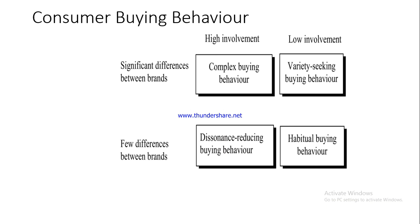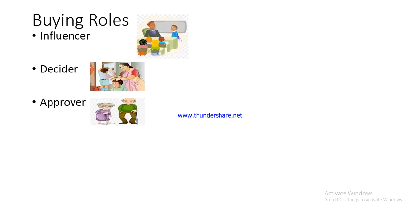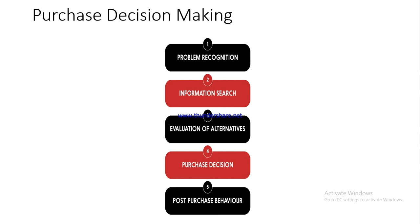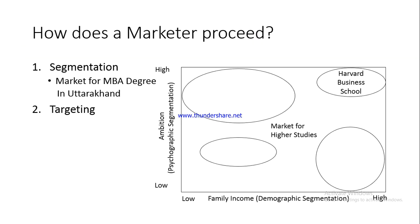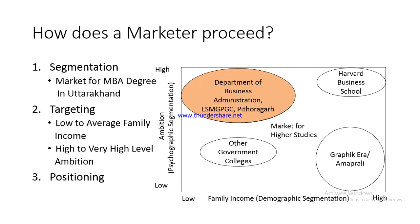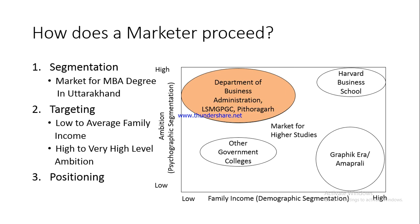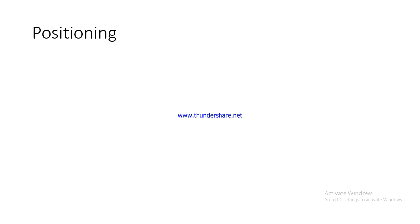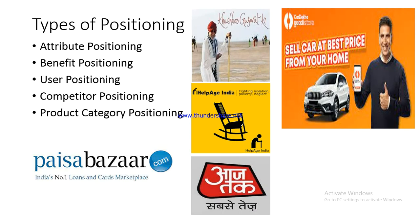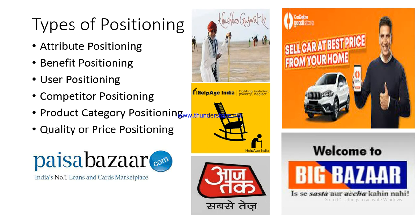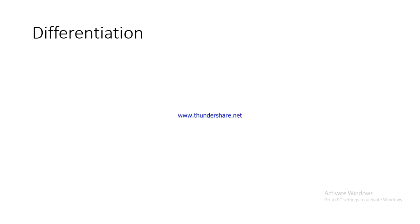In Unit 2, up till now we have discussed consumer buying behavior and buying rules. Purchase decision making was taken up in detail in the last session. We talked about positioning and understood that first a marketer has to segment the market, then target one or two or more segments, and then accordingly position his offering. Yesterday we discussed the different types of positioning, and today we will understand what differentiation is.